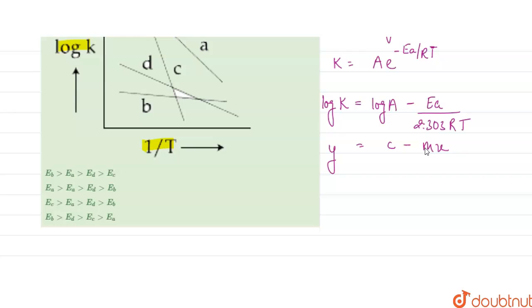Now what is the m, what is the x? So the m will be the slope. Now what is the value of m? m will be minus Ea upon 2.303 R. It is the m and the x is 1 by T.